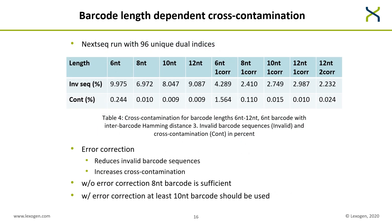We also performed an experiment to evaluate the cross-contamination achievable with different readout lengths of our barcodes. We used a NextSeq run with 96 unique dual indices, demultiplexing both without error correction and with error correction, and looked at two metrics: the percentage of invalid barcode sequences and, among valid barcode sequences, cross-contamination. The percentage of invalid sequences is lowest for 8 nucleotides and highest for 12 nucleotides, which is not surprising because the chances of observing an error are higher for longer sequences.